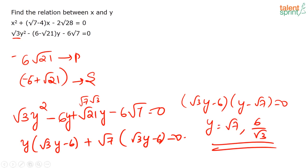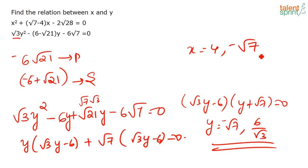We have x = 4 and x = −√7; y = √7 and y = 6/√3. If x = 4 then x is greater, but if x = −√7 and y = √7 then x = −y (x is less), and in other cases the comparison differs. So the relationship cannot be determined.